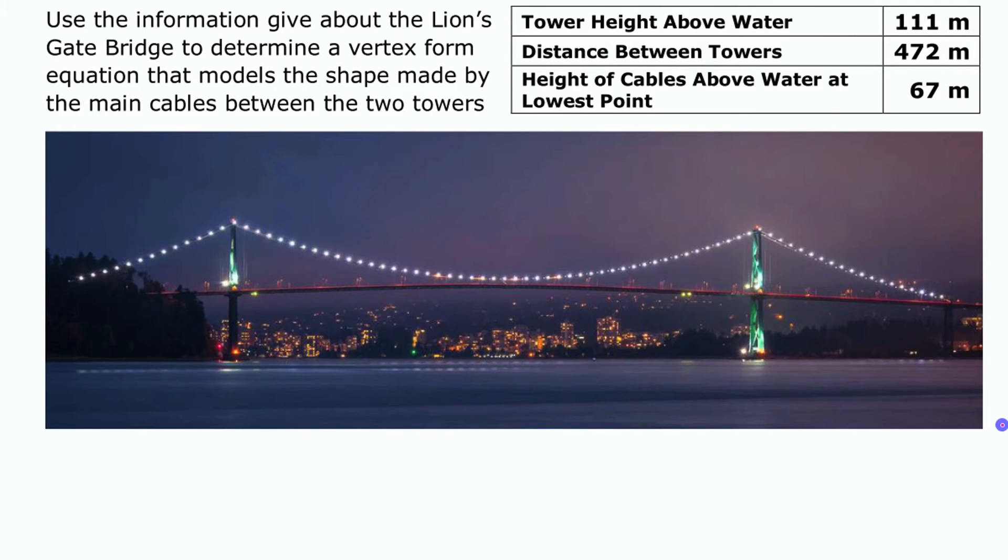All right, so to model this shape of this curve—this parabolic curve that the cables make—with a quadratic function, we need to use some of these measurements. Now these are just measurements that are readily available, and we have three things here: we have that the height of the towers is 111, we have that the distance between the two towers is 472, and we have that the height of the cables above the water—this distance in here—is 67.